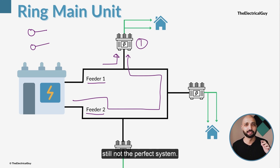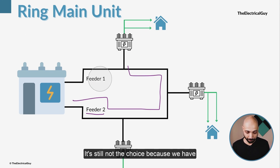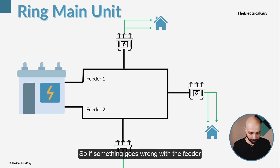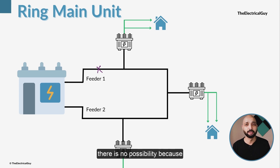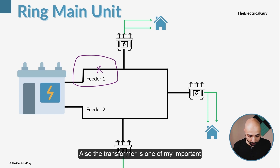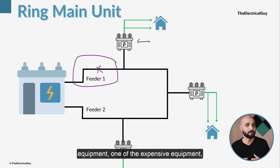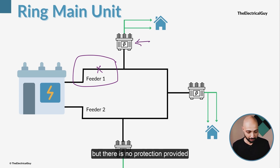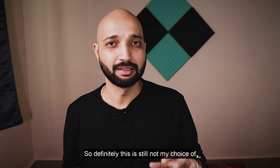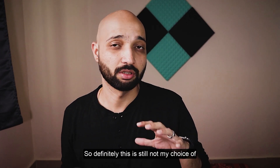However, this loop system is still not perfect because no switches have been provided. If something goes wrong with feeder one and you want to isolate an area, there is no possibility because there is no switch. Also, the transformer — an important and expensive piece of equipment — has no protection provided to it. So this is still not an ideal system.